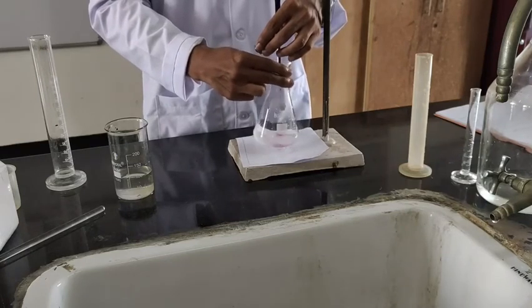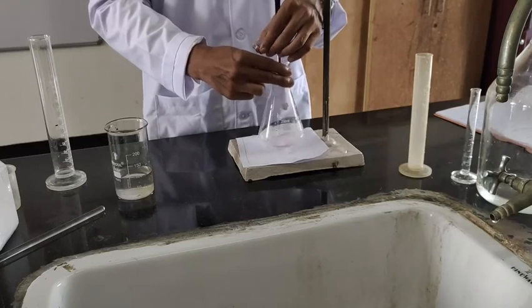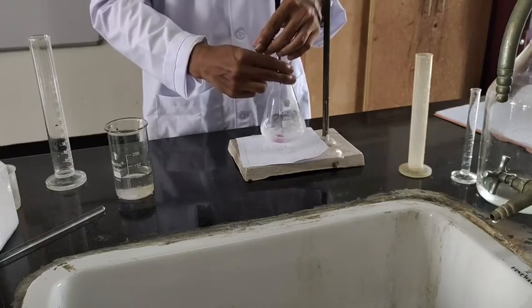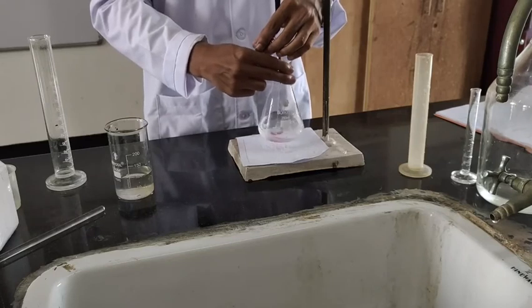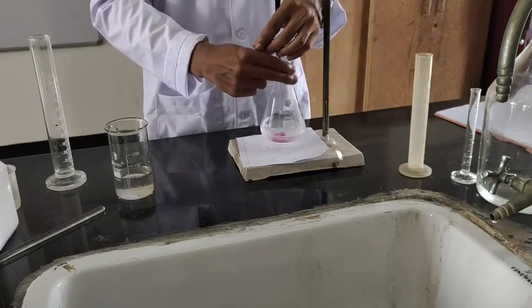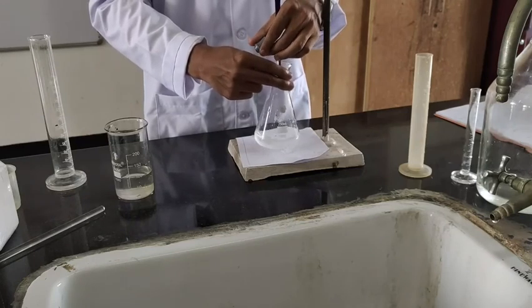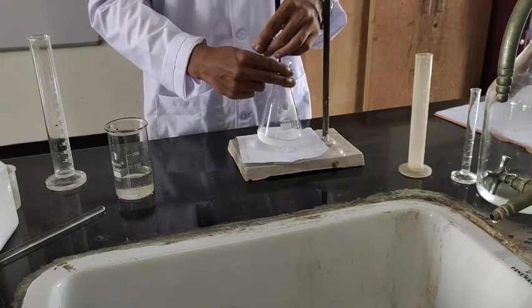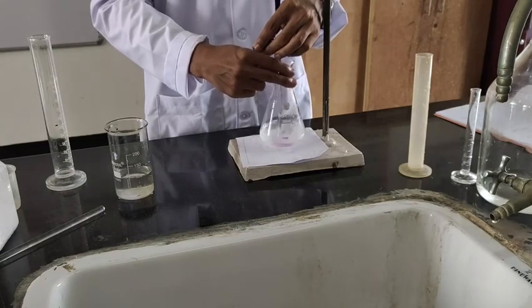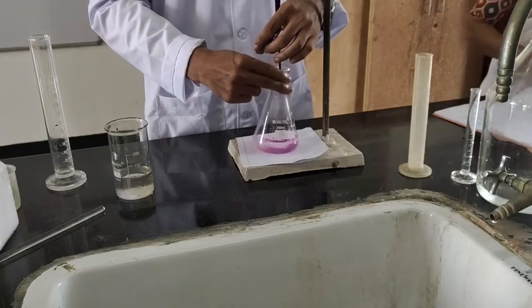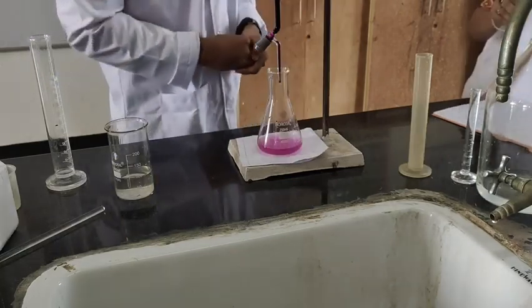Put the potassium permanganate solution dropwise and look for a constant pinkish color. You can see here the pink color has appeared. This is the end point of titration.